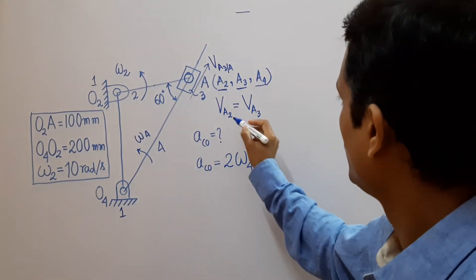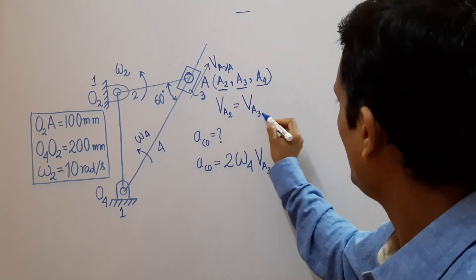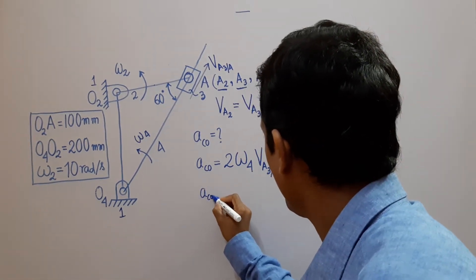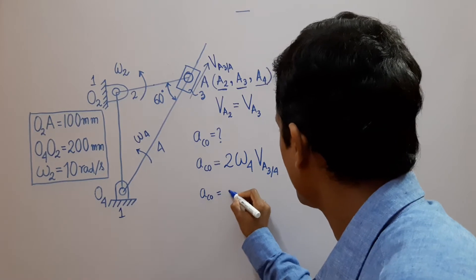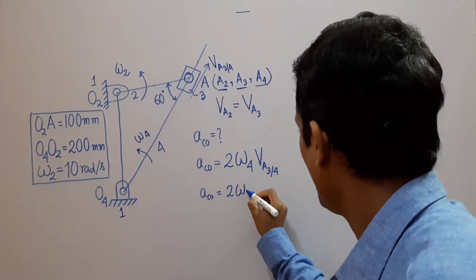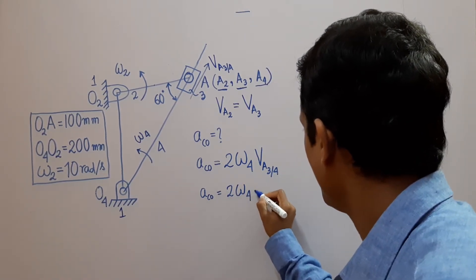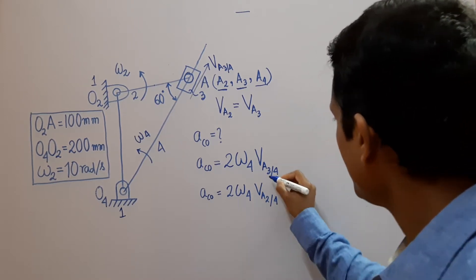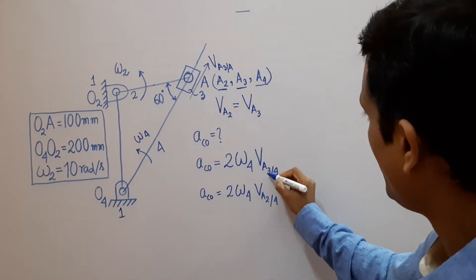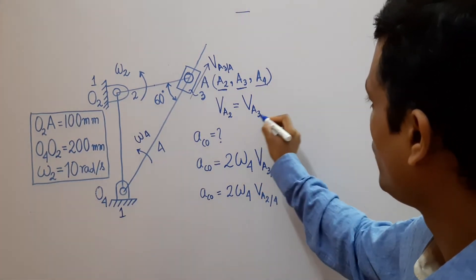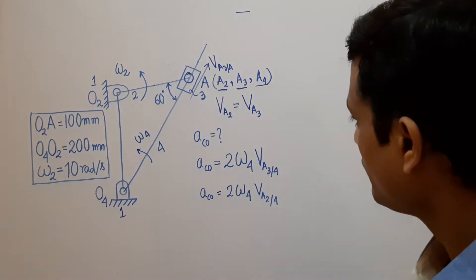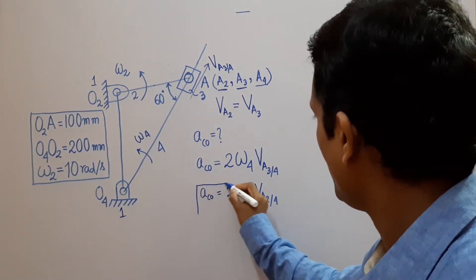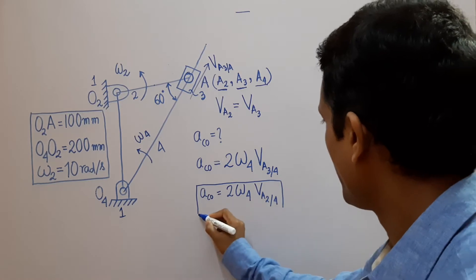Since VA2 equals VA3, the Coriolis component of acceleration is 2 × omega4 × VA2/4, because we can replace VA3 with VA2. So we have to determine these two parameters: omega 4 and VA2/4.